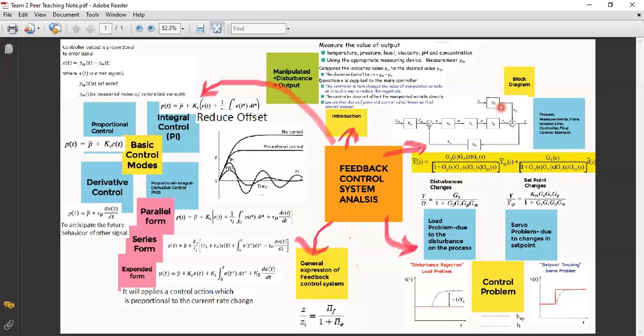So as you can see at the block diagram, the signal path from E to Y through block GC, GD, GP is referred as forward path. And from Y to the comparator through GM is called feedback path.